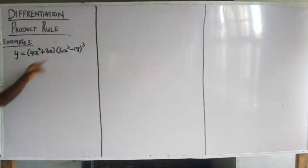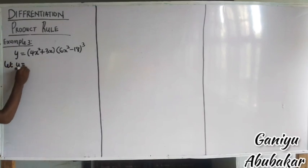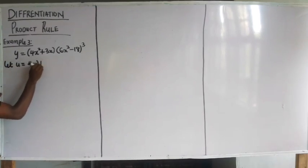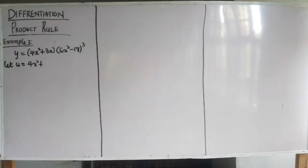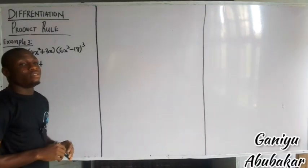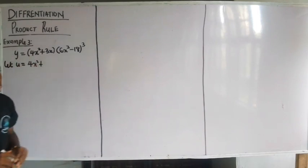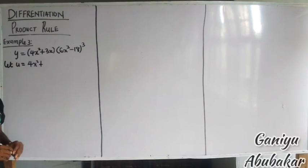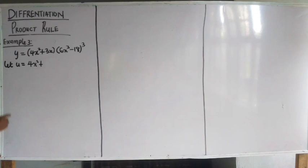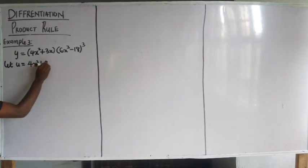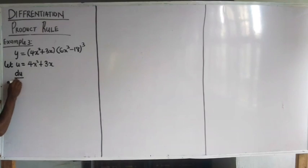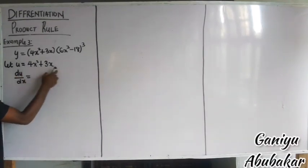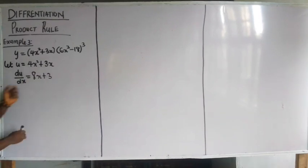So let's call this U and call this V. Let U be equal in value to 4x squared plus 3x. If I differentiate U with respect to x, I'll have dU/dx being equal to — differentiating all this term — I'll have 8x plus 3 after differentiation.